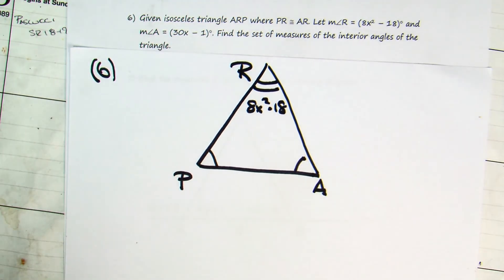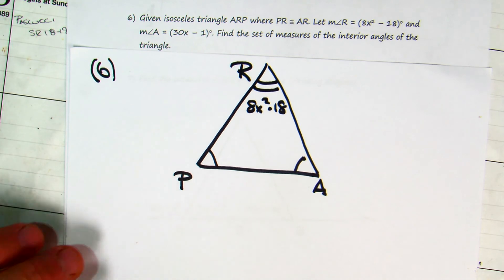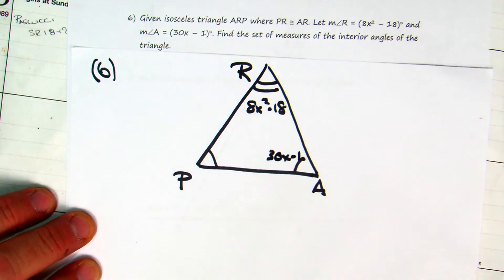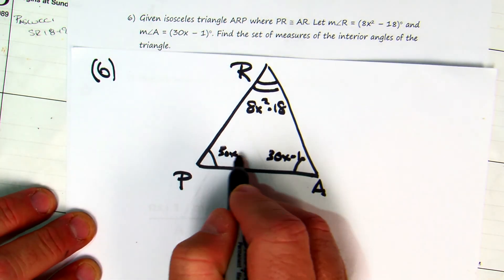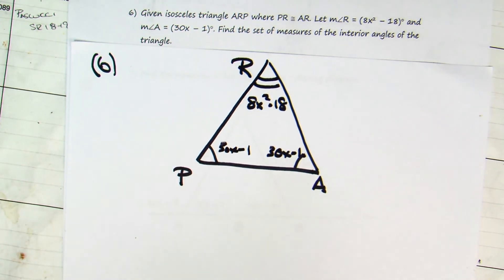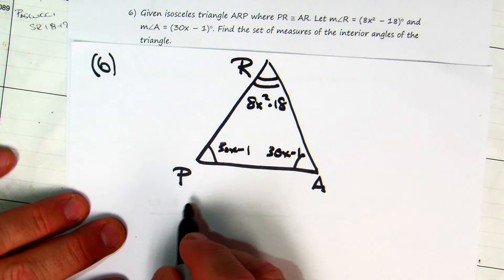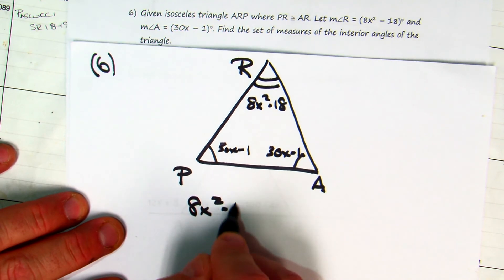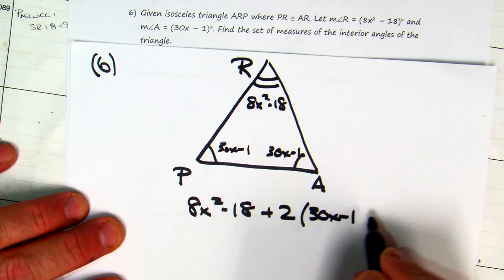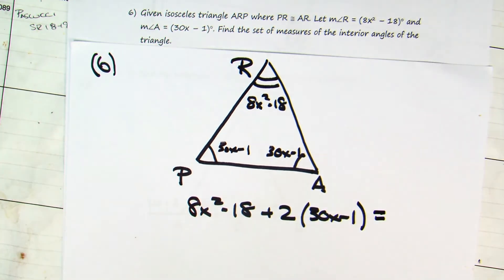So where we were, the vertex angle is 8x squared minus 18, and A is 30x minus 1, which means P is also 30x minus 1. So I'm going to take the 8x squared minus 18, add to that 2 times 30x minus 1, and set that equal to 180.